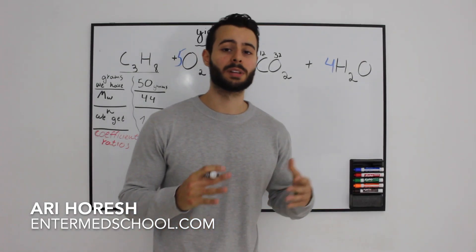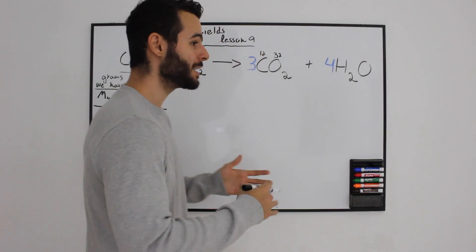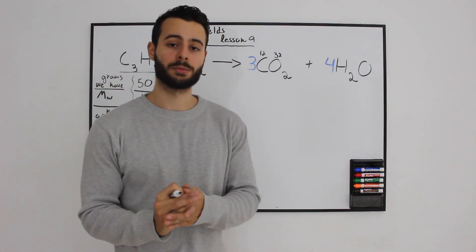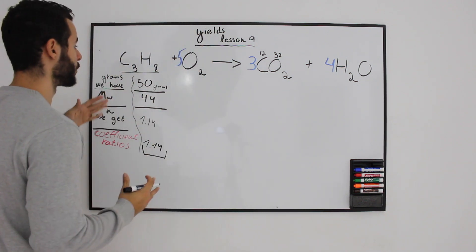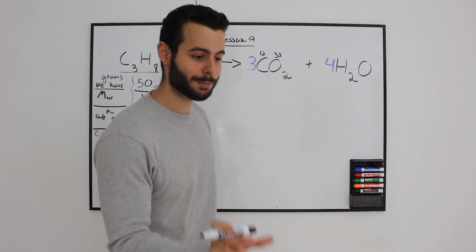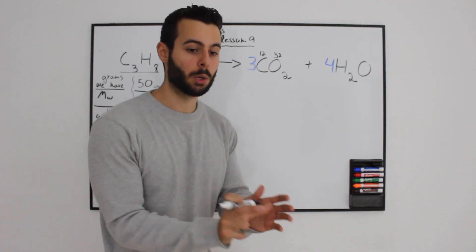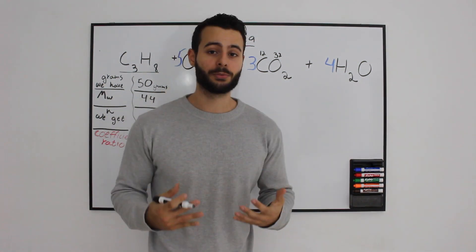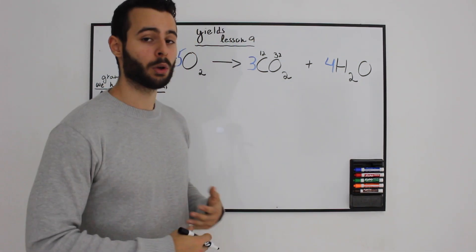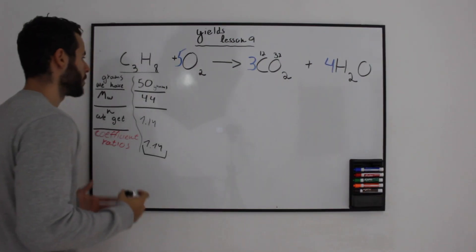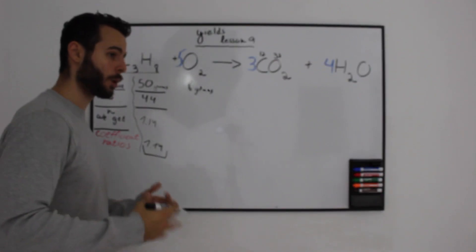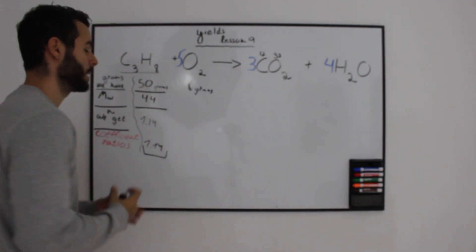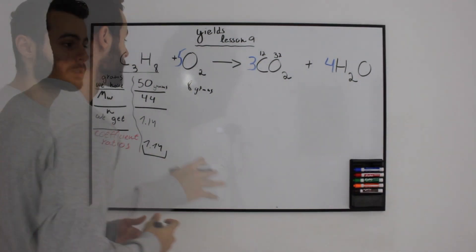How to actually calculate the yield when you have a limiting reactant. What is a limiting reactant? If you have a very limited amount of oxygen and an unlimited amount of propane, only a very specific amount of propane will react with the oxygen. Let's say we have the following question: 50 grams of propane are reacting with 8 grams of oxygen. Which one — oxygen or propane — is the limiting reactant?